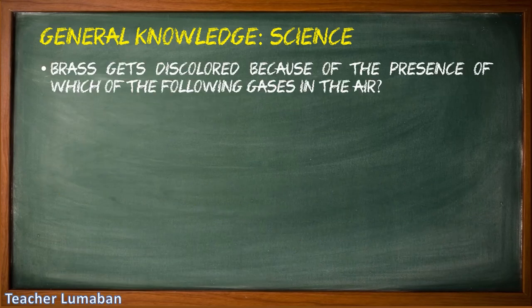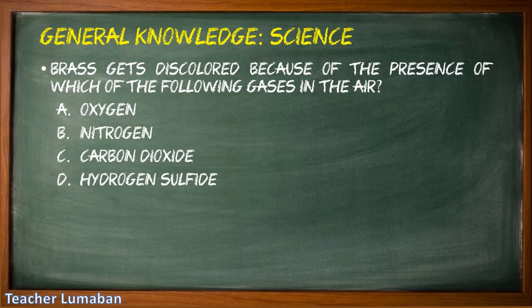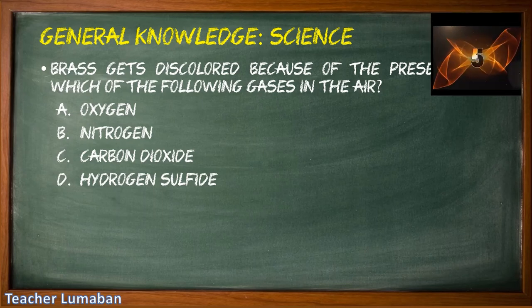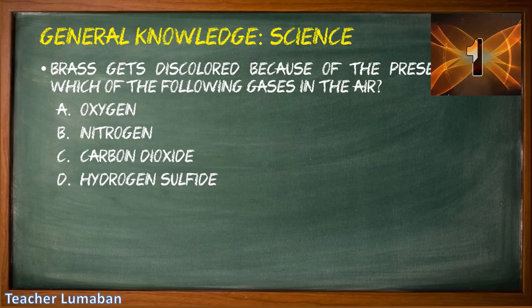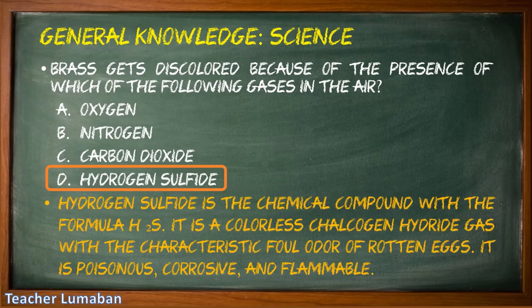Brass gets discolored because of the presence of which of the following gases in the air? Letter A: oxygen, Letter B: nitrogen, Letter C: carbon dioxide, Letter D: hydrogen sulfide. The correct answer is Letter D: hydrogen sulfide. Brass gets discolored because of the presence of hydrogen sulfide gas in the air. Hydrogen sulfide is the chemical compound with the formula H₂S. It is a colorless chalcogen hydride gas with the characteristic foul odor of rotten eggs. It is poisonous, corrosive, and flammable.